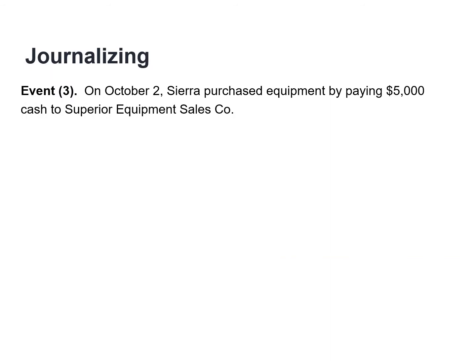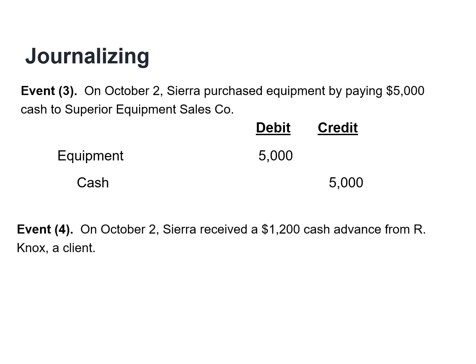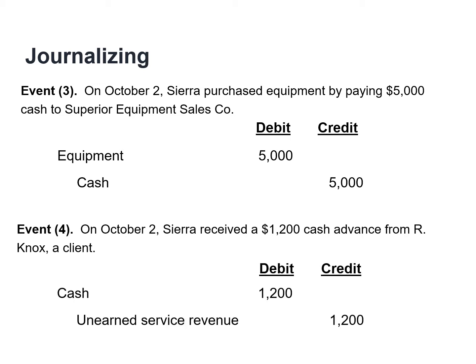Before we talk about deferrals, let's review some transactions from the previous chapter. On October 2nd, Sierra purchased equipment by paying $5,000 in cash, so we need to debit equipment and credit cash for $5,000. Sierra also received a $1,200 cash advance from a client for guided services expected to be completed in the future. Sierra has a liability to the customer until they provide the service, so we need to debit cash and credit unearned service revenue for $1,200.